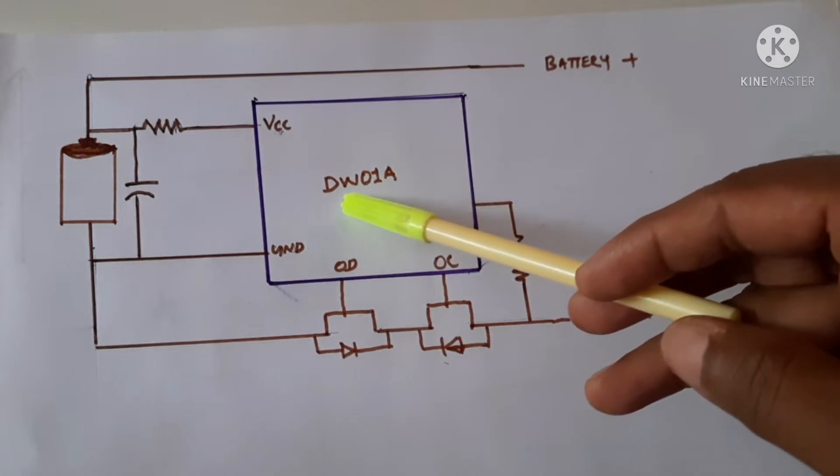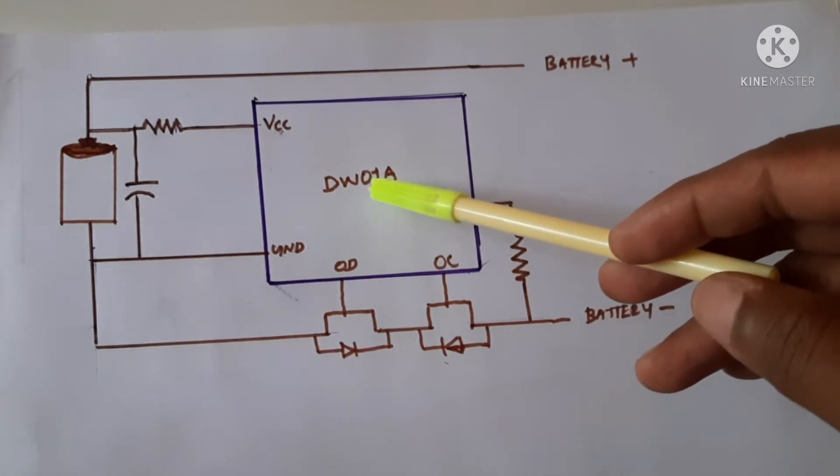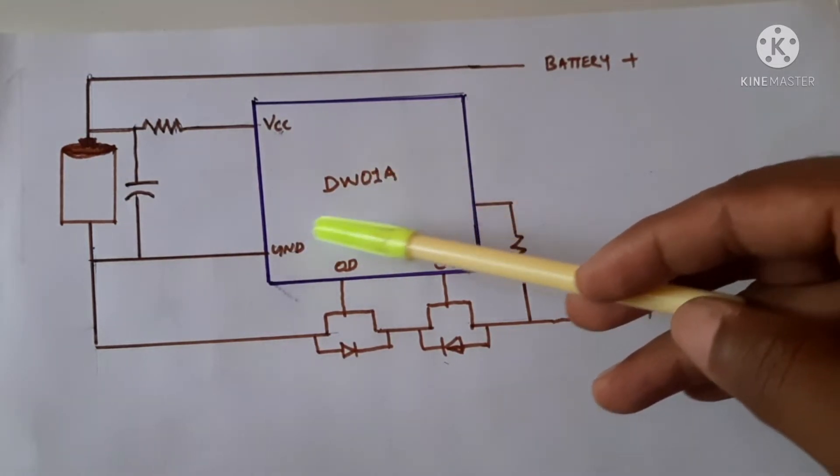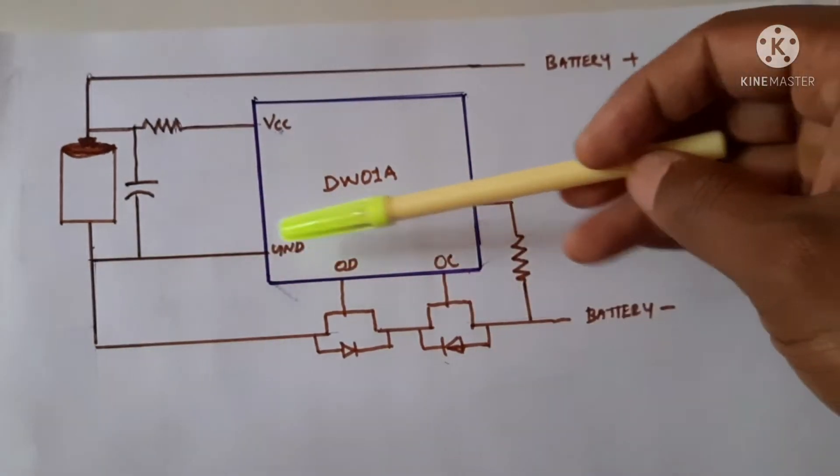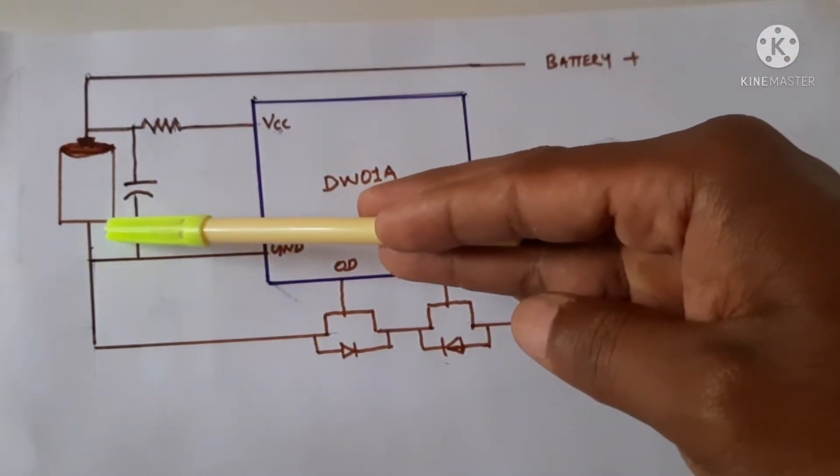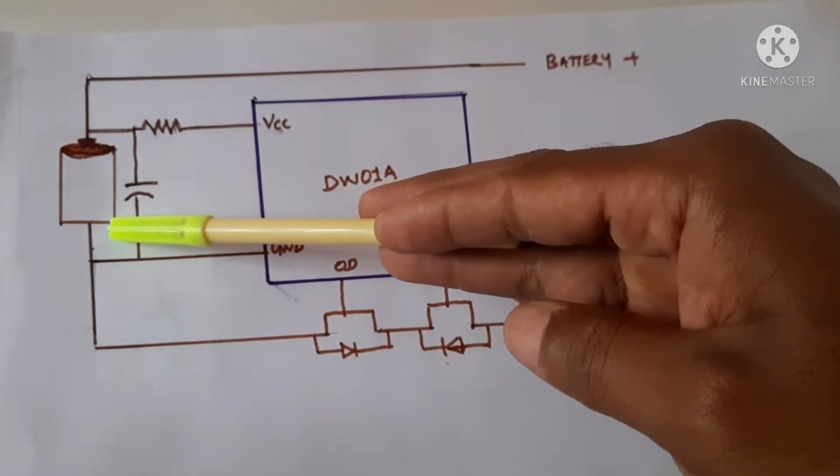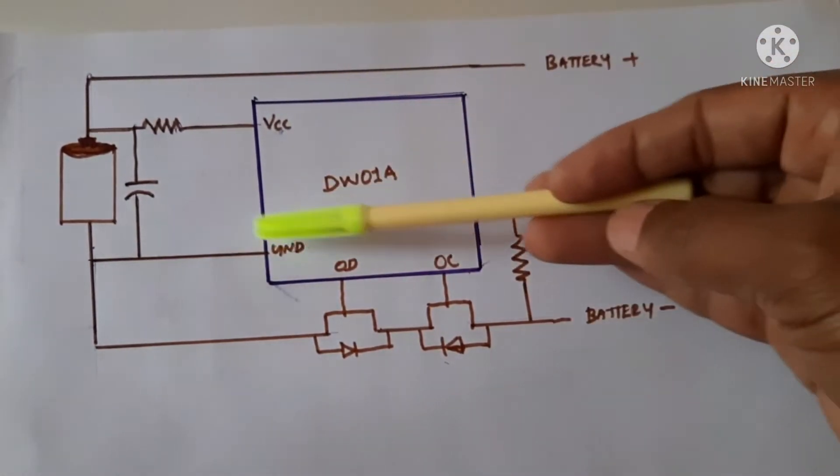Welcome all. Today we are going to discuss how a DW01A IC is working. This IC is used to protect the lithium-ion battery from overcharge and over discharge. How this circuit is working?